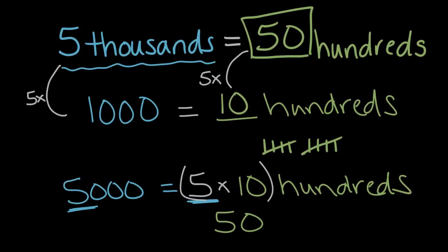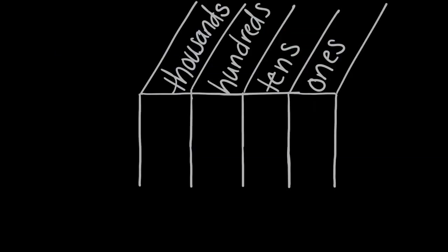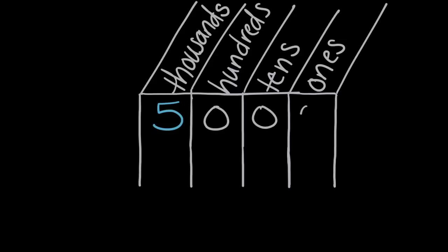Another way we could think about this is place value. Let's look at a place value chart. Here we have a place value chart, and if we fill in five under thousands, we can see that we have three empty spaces — no hundreds, no tens, and no ones.